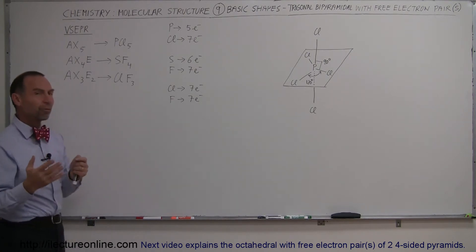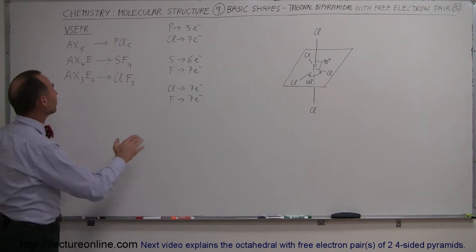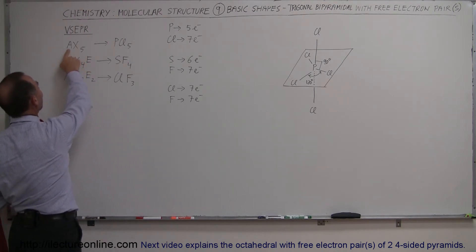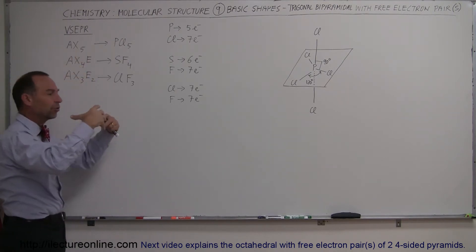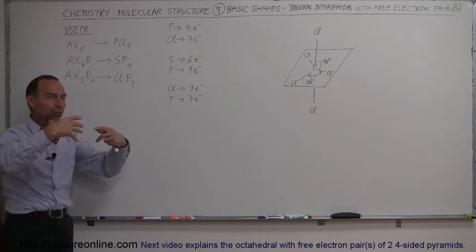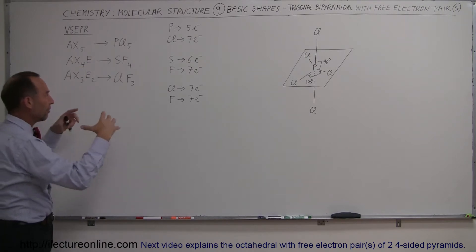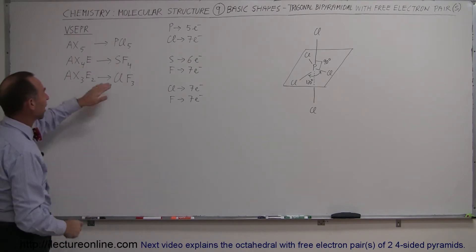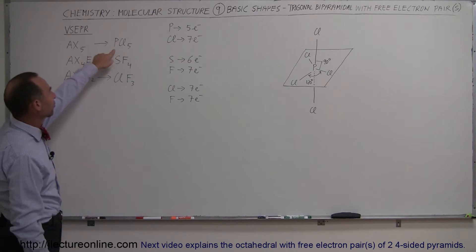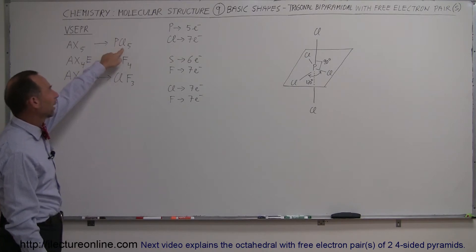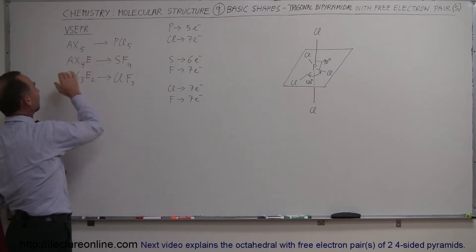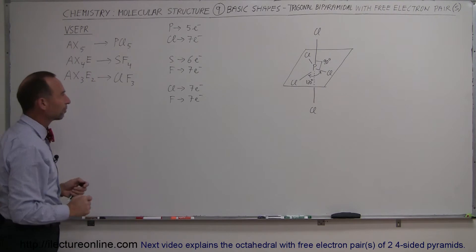Molecules in this shape have one central atom and five appendages — five terminal atoms making up the shape of the molecule. For example, phosphorus pentachloride is one of those molecules: one central atom and five appendages.